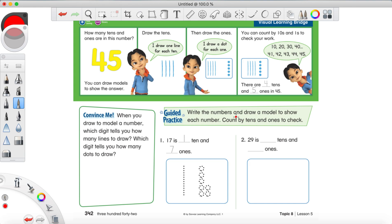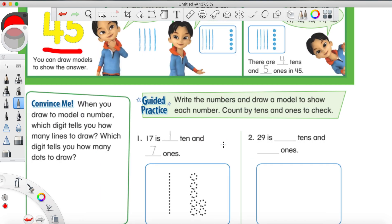Alright, everyone. we should now be on page 342. And at the top of your page you should see the big yellow number 45 and a boy trying to make the number 45 with these tens sticks and ones circles. Let's go through number 1 together before you try number 2 on your own.